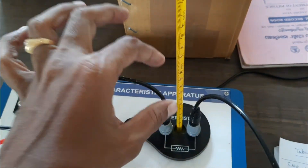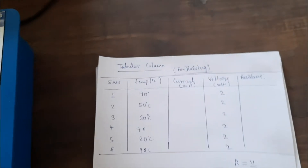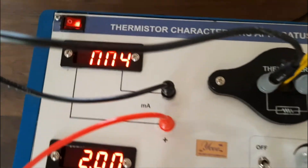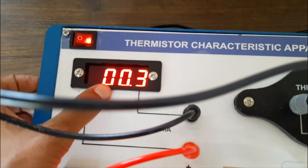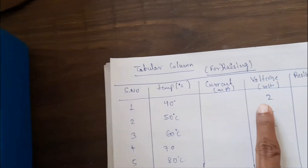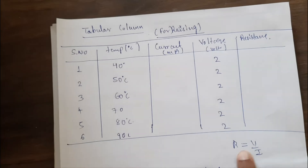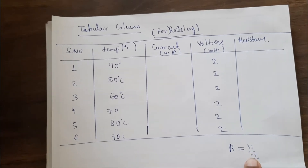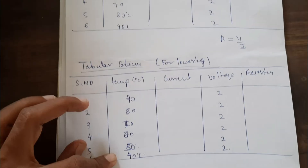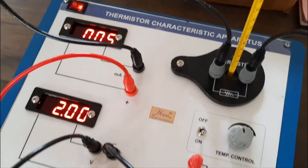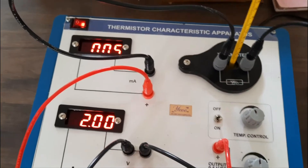For rising temperature, take readings at 40 degrees Celsius and note the corresponding ammeter current. With voltage fixed at 2 volts, calculate resistance using Ohm's law: R = V/I. For lowering temperature — from 90 degrees down to 40 degrees Celsius — note the current reading, with voltage remaining fixed, and calculate the resistance at each step.